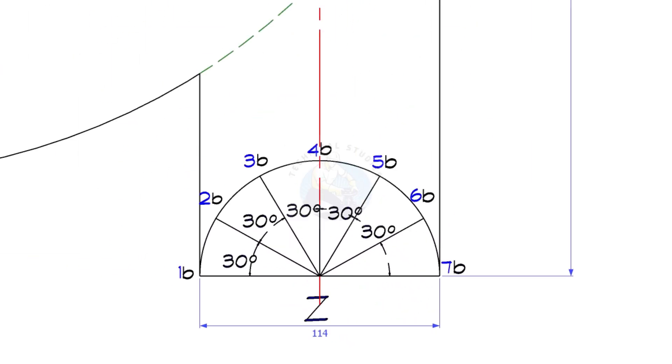Divide the semicircle into six equal segments, as represented in both the front and top views.